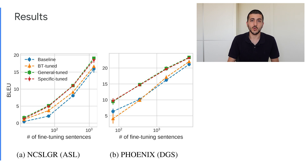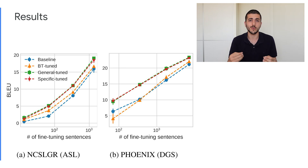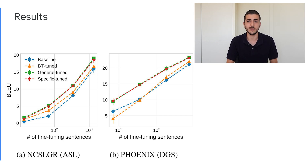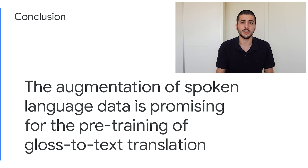Using this methodology, we perform multiple experiments with different sizes of data, each repeated three times to account for variance in training. We find that using our pre-training, we achieve consistently higher automatic evaluation scores for both datasets, and that both our general rules and language-specific rules perform equally well as pre-training data. Therefore, we conclude that the augmentation of spoken language data is promising as pre-training for gloss to text translation, and it can improve translation quality without requiring additional parallel data.